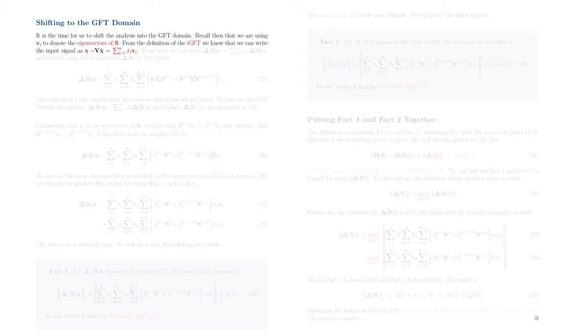Recall that we are using Vi to denote the eigenvectors of S. From the definition of the inverse GFT, we know that we can write an input signal X as the product of the eigenvector matrix V and the GFT X tilde.